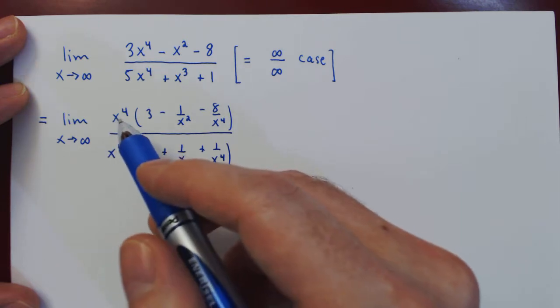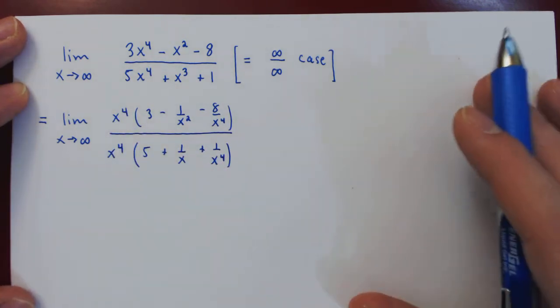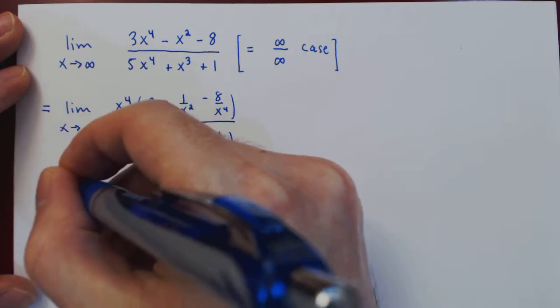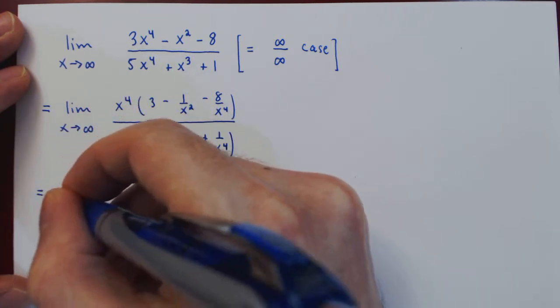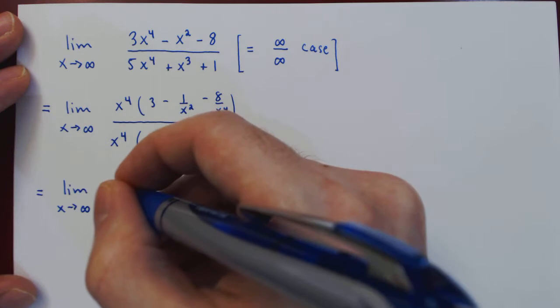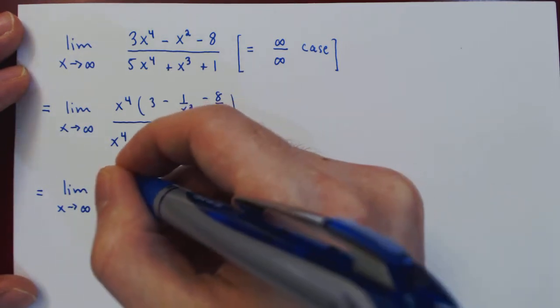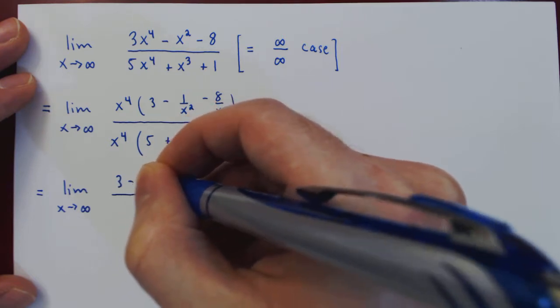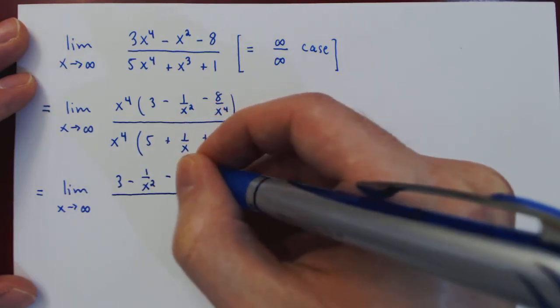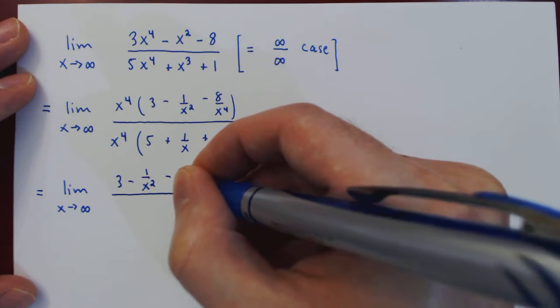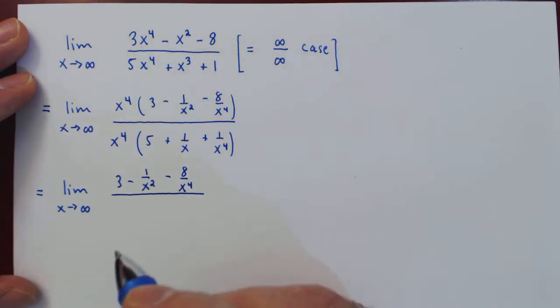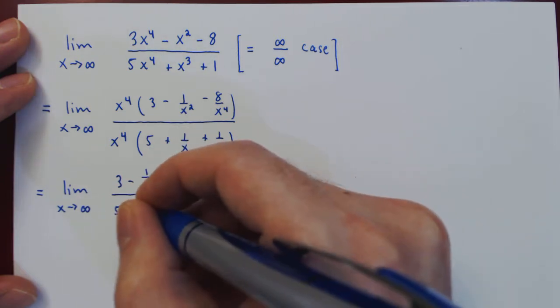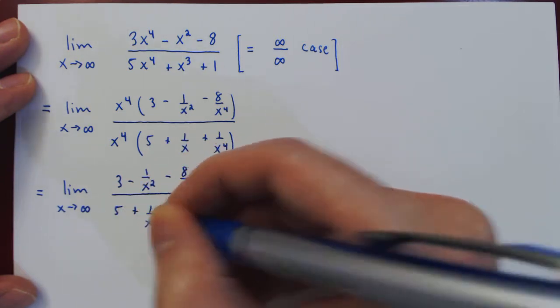We can now cancel the common factor of x^4 top and bottom, and so what's left is the numerator 3 minus 1 over x squared minus 8 over x^4, and on the denominator 5 plus 1 over x^4.